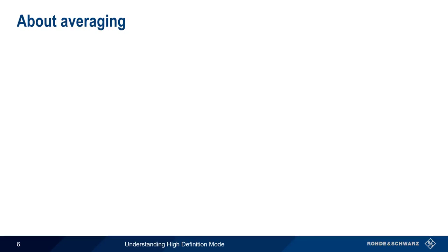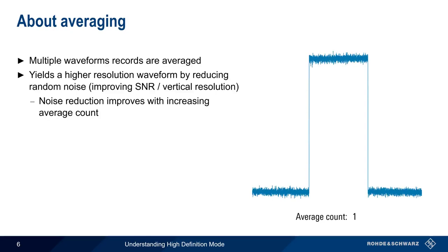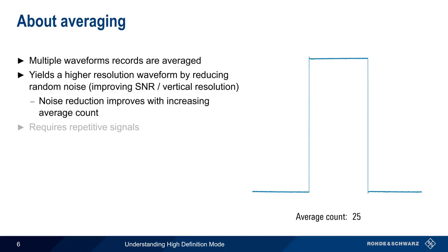Unlike the number of ADC bits, which is a fixed hardware-defined value, averaging is a configurable method for improving vertical resolution or reducing noise. As the name implies, this method averages the waveform points of multiple sequential acquisitions. The advantage of averaging is that it can greatly reduce random noise, and thus increase signal-to-noise ratio and vertical resolution. The more waveforms that are averaged together, the greater the noise reduction. For example, any single acquisition of this square wave contains a noticeable amount of noise, but this noise is substantially reduced as more acquisitions are averaged together.